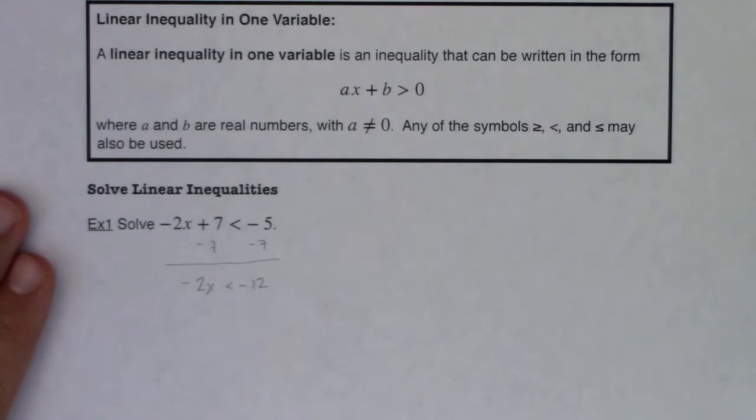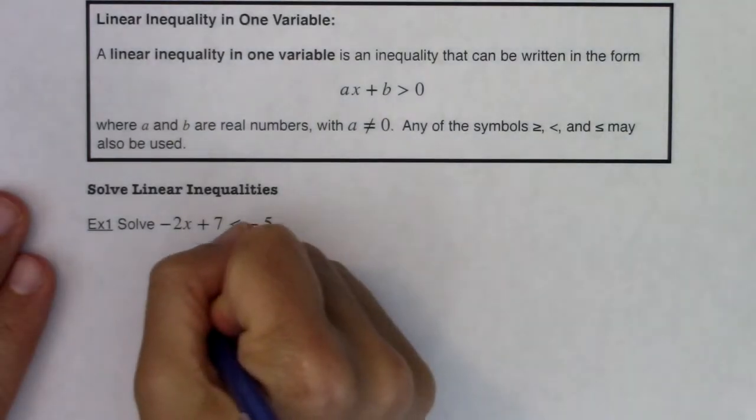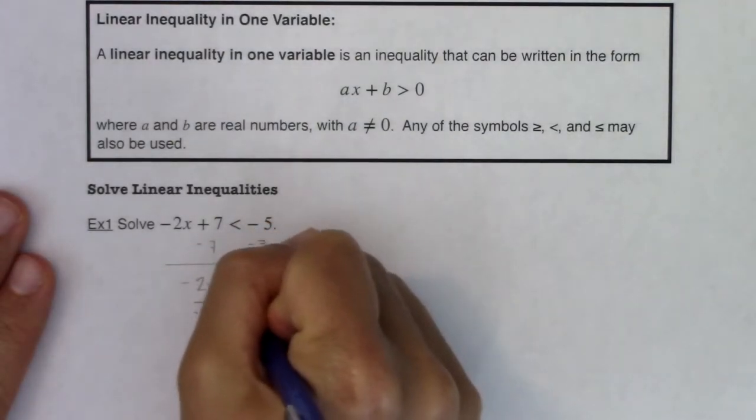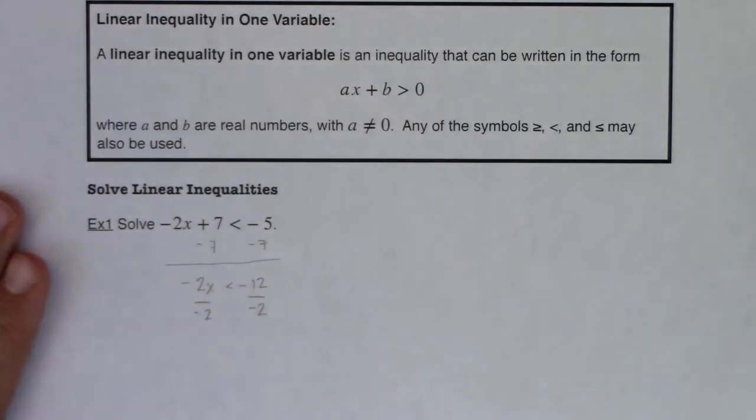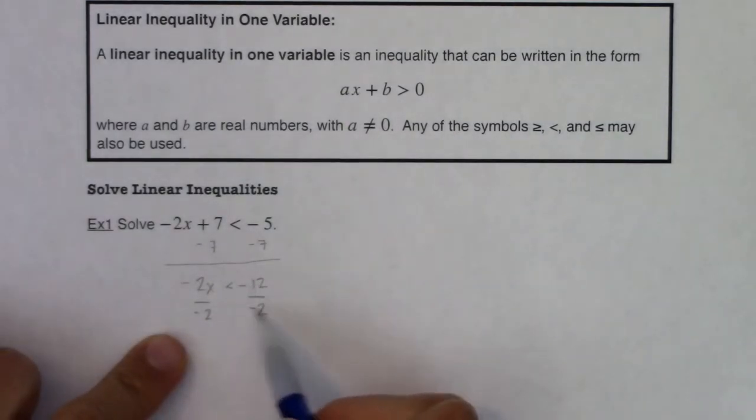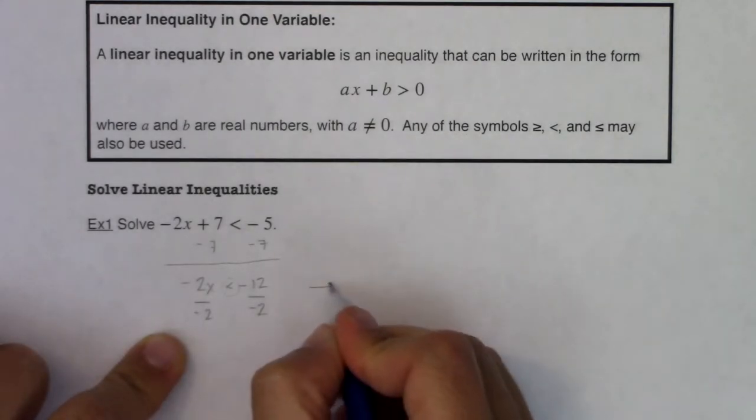Then you would say, hey, you know what Miss A, I'm going to divide by negative two. And here's that one catch that I want to remind us about. When you're dealing with linear inequalities and you're either multiplying or in this case dividing both sides of that inequality by a negative number, you have to remember to change the sign of the inequality.